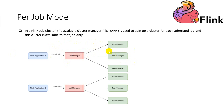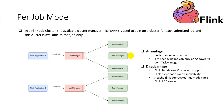I will also give you the per-job model advantages and disadvantages. Advantage: the per-job model provides better resource isolation, because the different Flink jobs will not affect each other at all, and a misbehaving job can only bring down its own task manager.